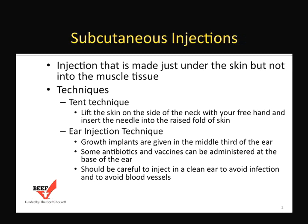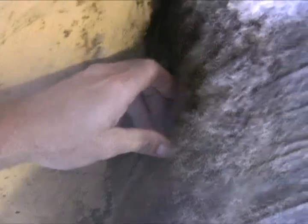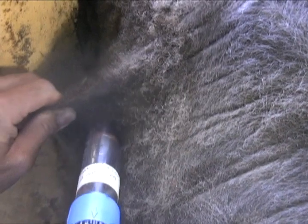Subcutaneous injections are given just under the skin and not into the muscle tissue. There are two techniques that can be used to give a subcutaneous injection. One, and probably the most popular, is the tenting technique, where the skin is lifted from the side of the neck and a tent is formed. The injection is given at the base of that tent. To conduct the tenting technique, pull the skin away from the side of the neck and give the injection at the base of the tent formed.